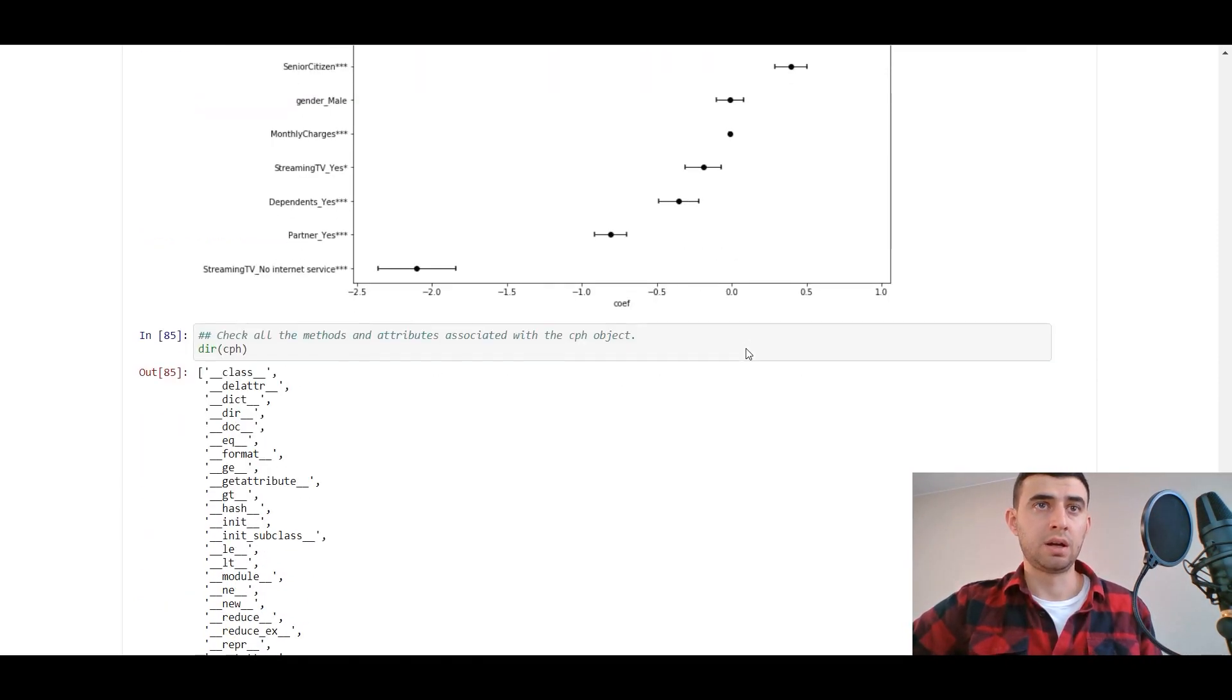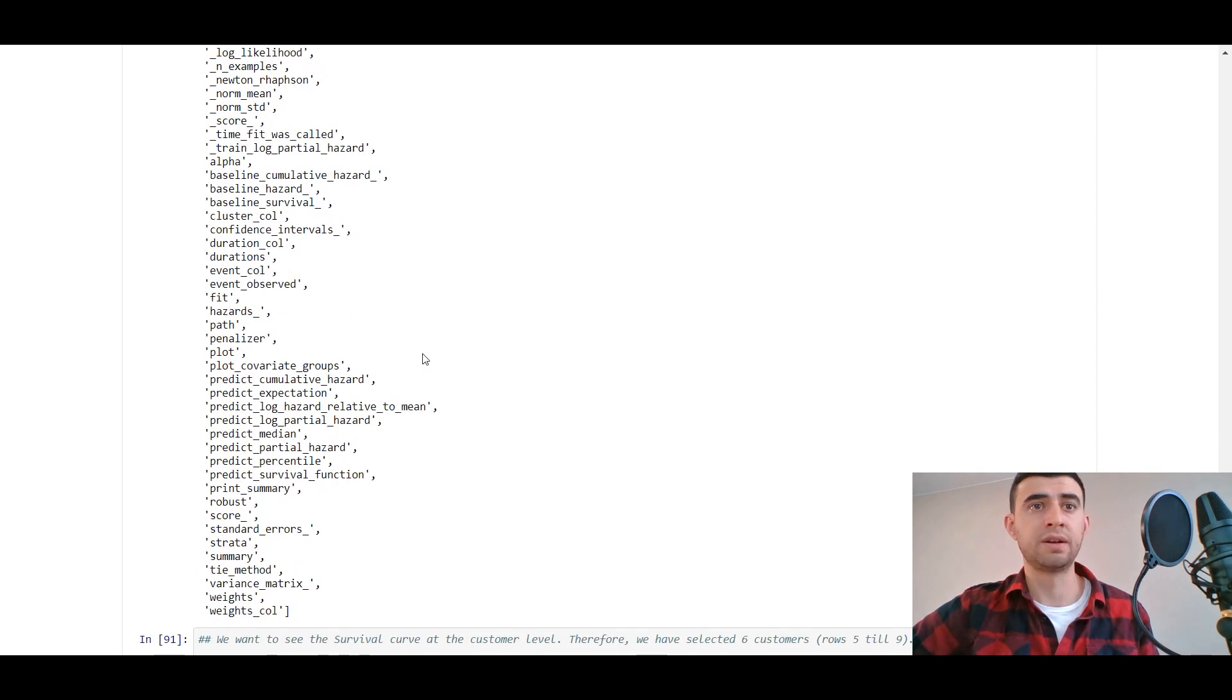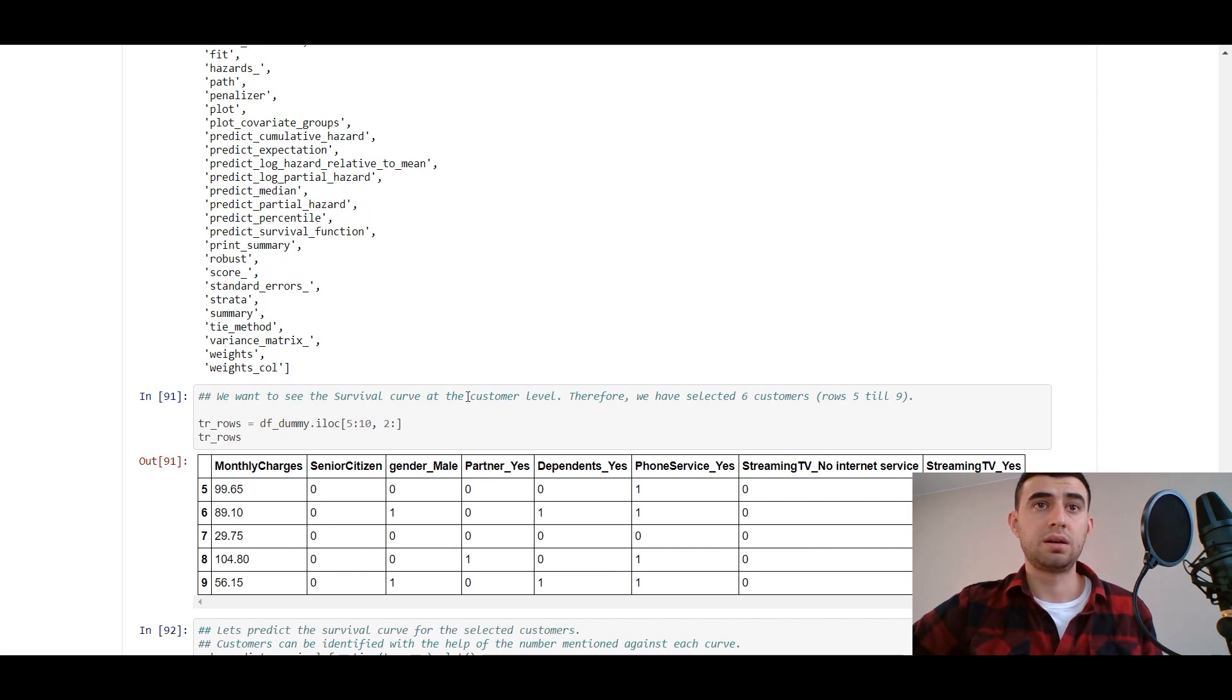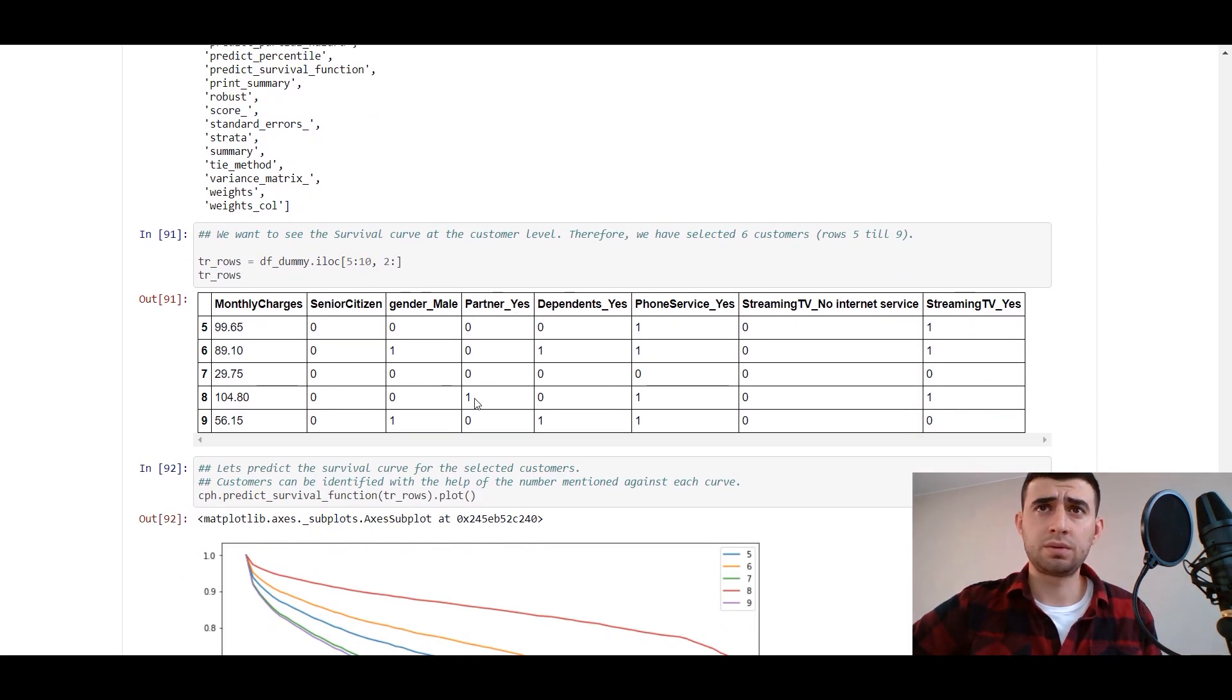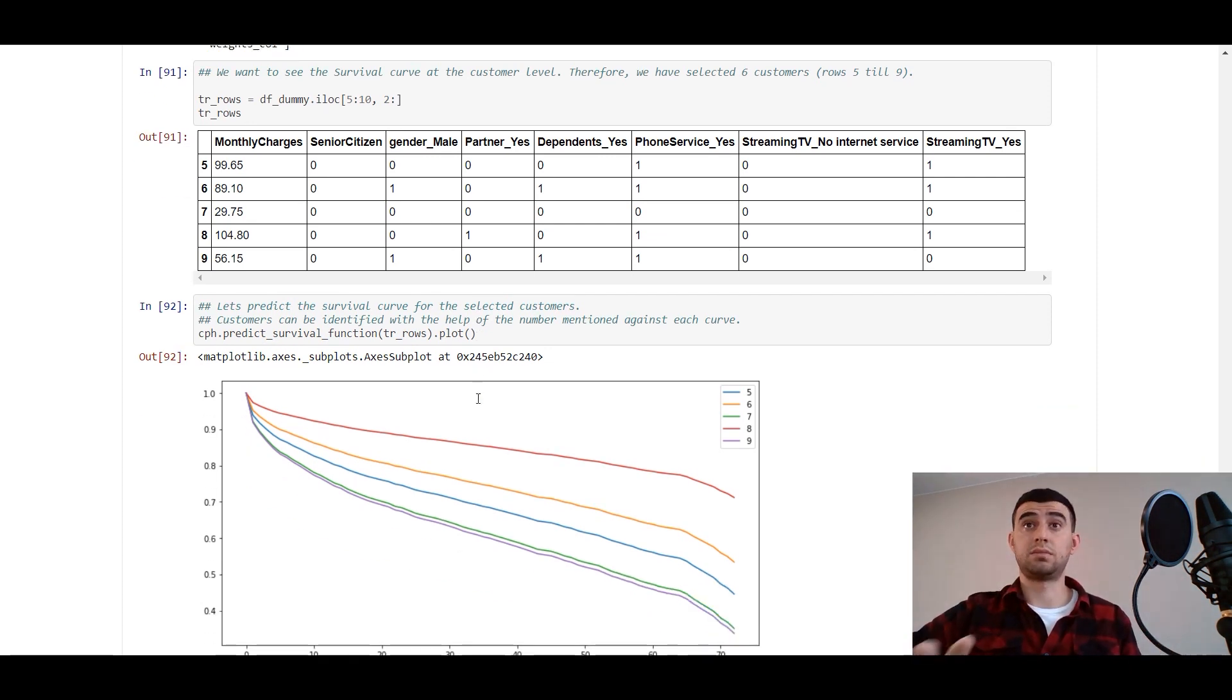You can check all the methods and attributes associated with the Cox proportional hazard model object. They got a lot of methods and a lot you can take from this.